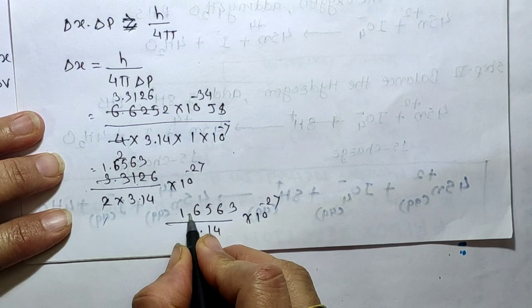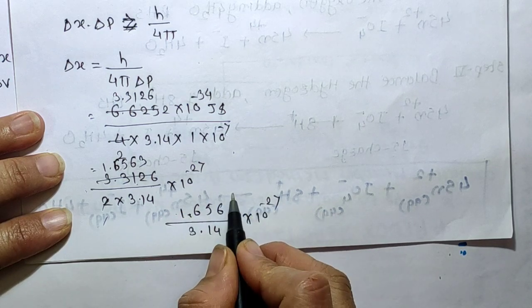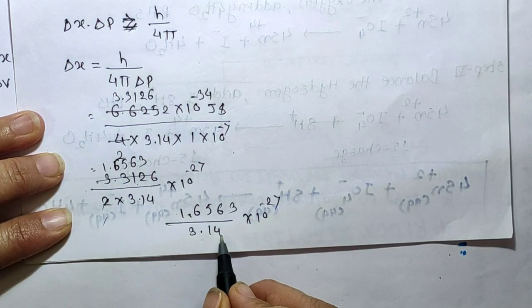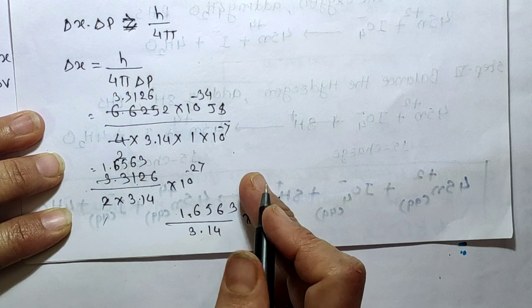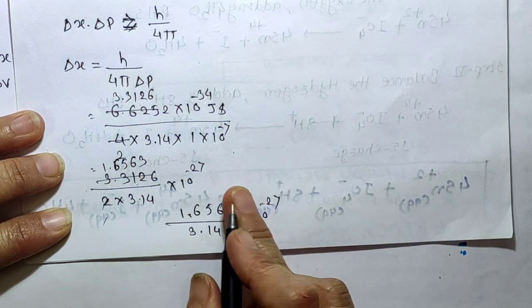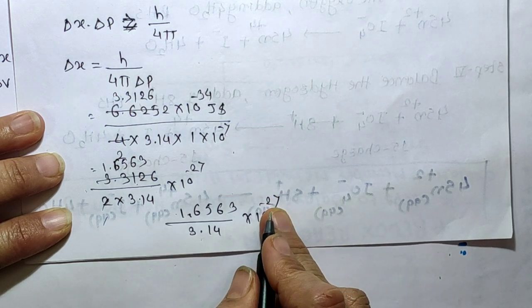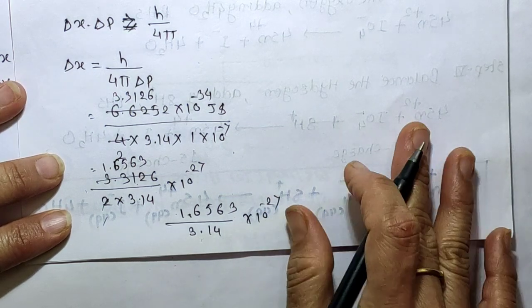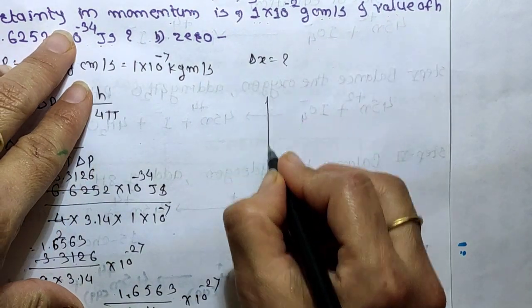Simplifying further: 10 raise to minus 2 comes to the numerator, so combined with 10 raise to minus 27 we get 10 raise to minus 29. We now compute 1.6563 divided by 3.14 into 10 raise to minus 29.